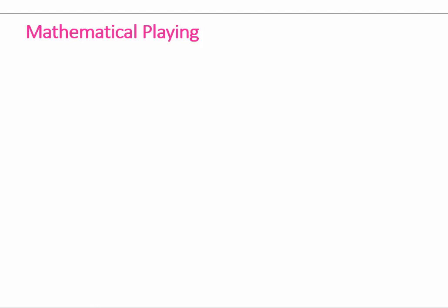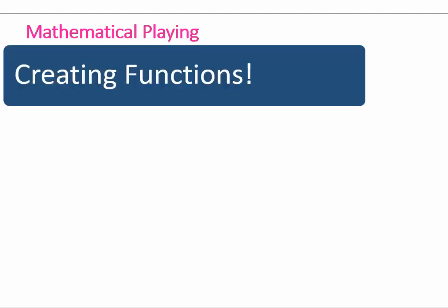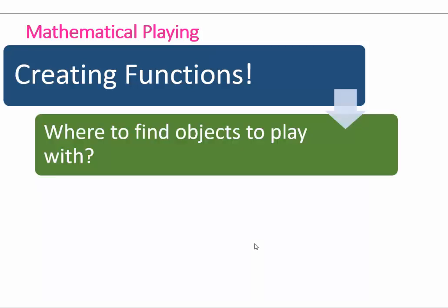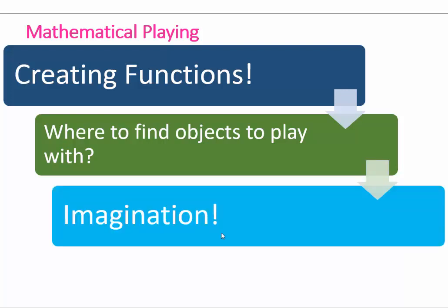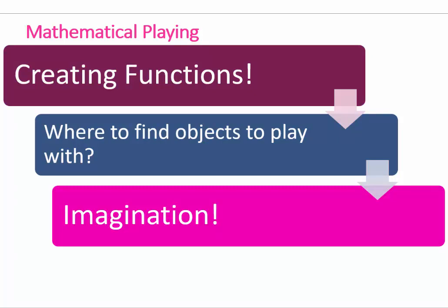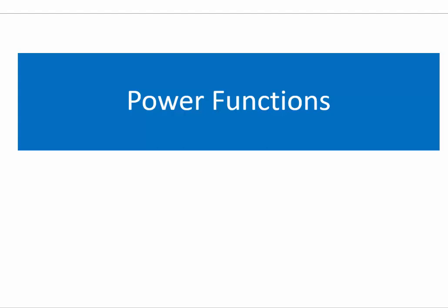As mathematicians, we want to play — meaning we want to create additional types of functions. To do that, we start with objects we have already studied and use them to create new functions. That requires cultivating our imagination and being open to possibilities. We look at objects like decimal numbers, which can be written as powers of ten. That is our first clue: our first function we will study are power functions.